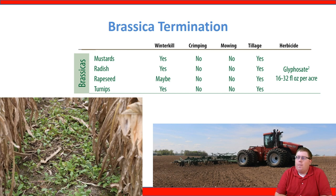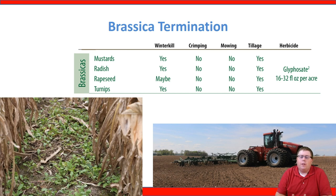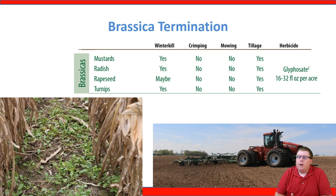Brassica termination in Wisconsin is generally not a concern because these species winter kill. However, there are two extremes to consider. One photo shows interseeded radish with very little biomass produced in the fall, providing minimal cover crop benefits — timing of planting should be adjusted to improve results. The other photo shows a monoculture of brassicas, where after winter kill the soil has been loosened and is very prone to erosion. Brassicas should be planted with a grass cover crop companion that will need to be terminated in the spring.